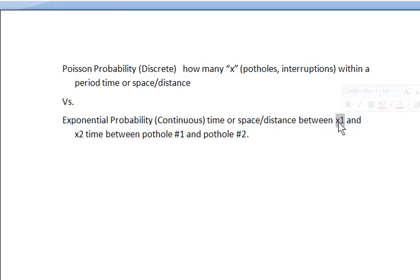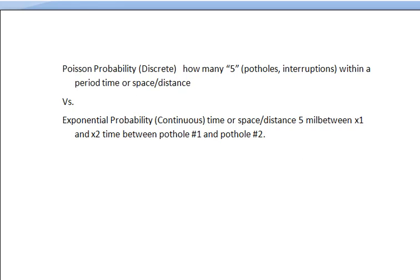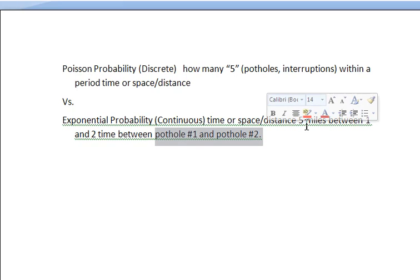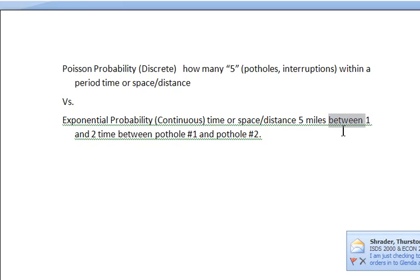where X1 and X2 might be between pothole number one and pothole number two. So again, the discrete version would be are there five potholes, whereas the exponential probability would be the time between the first pothole and the second pothole.